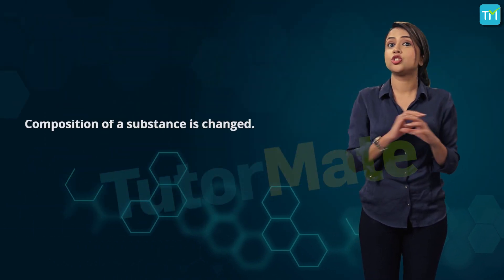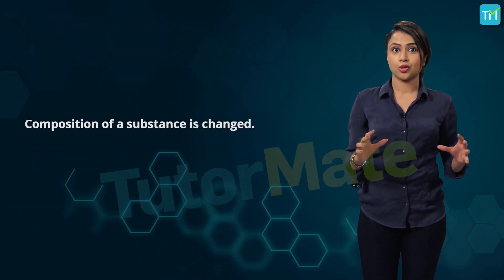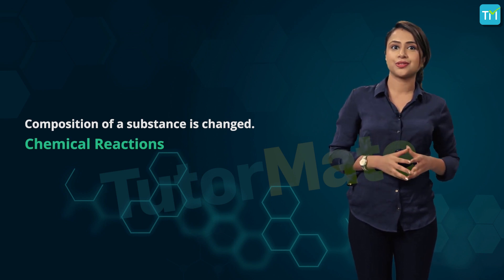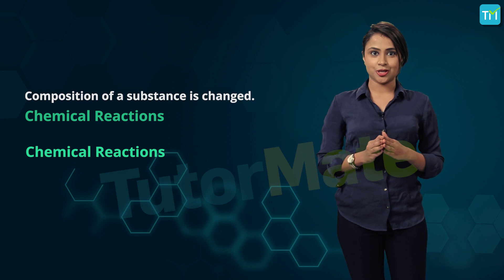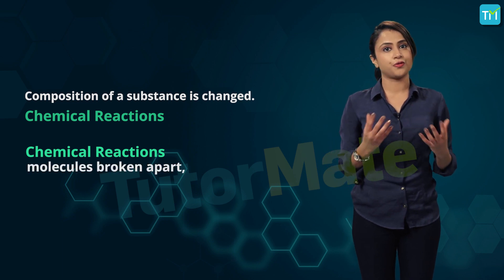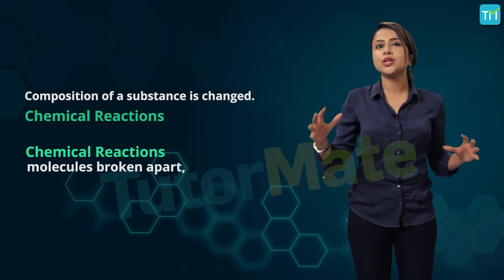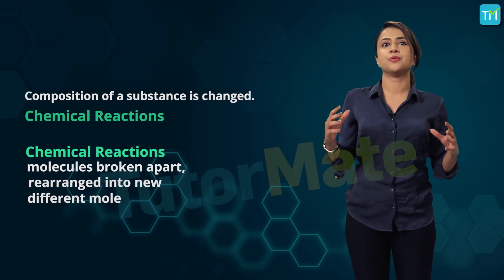However, there are other times when things look different because they've gone through something more than just a phase change. Sometimes the composition of a substance is changed, which is what happens during chemical reactions. During chemical reactions, the molecules of a substance are broken apart and rearranged into new and different molecules.